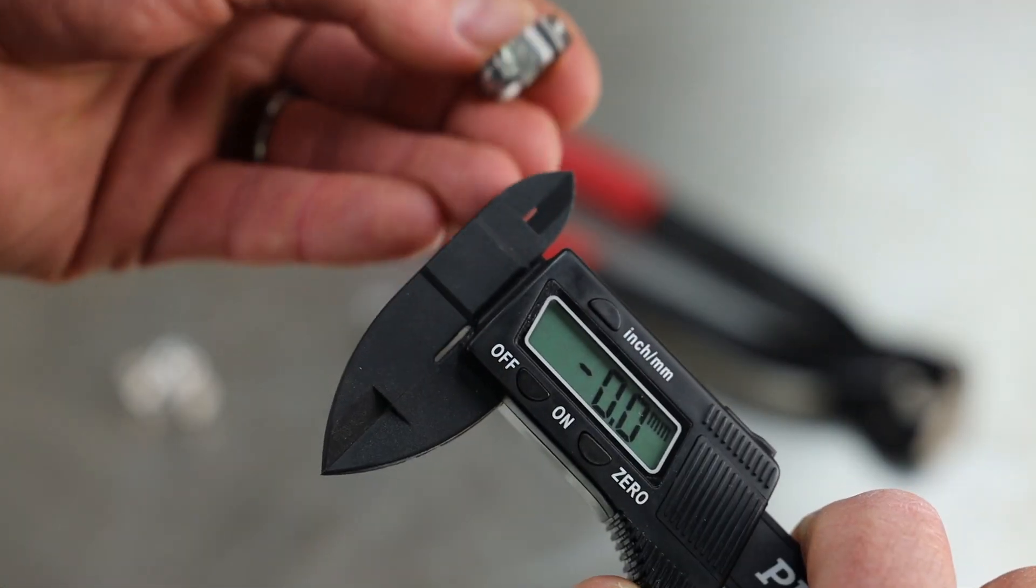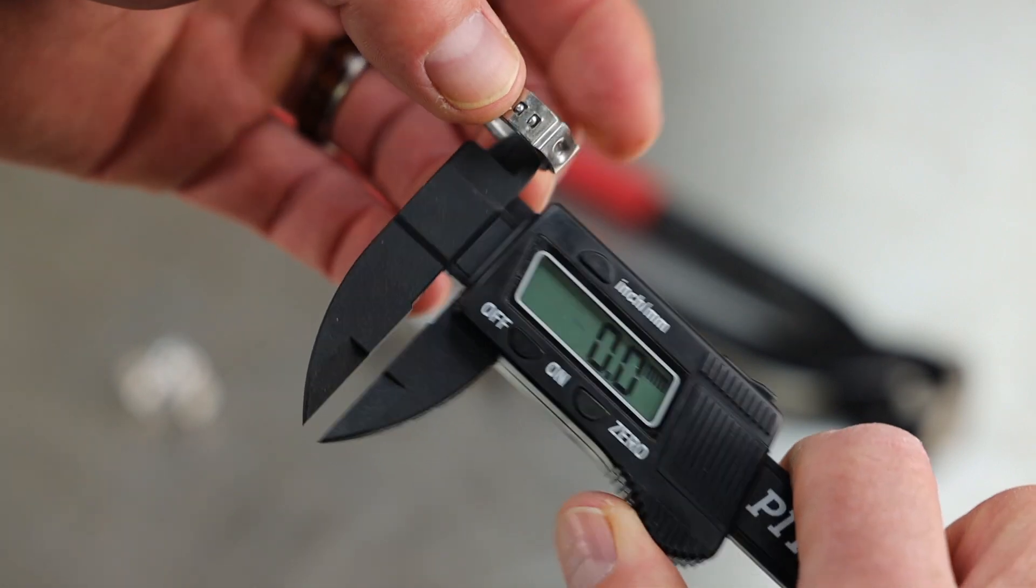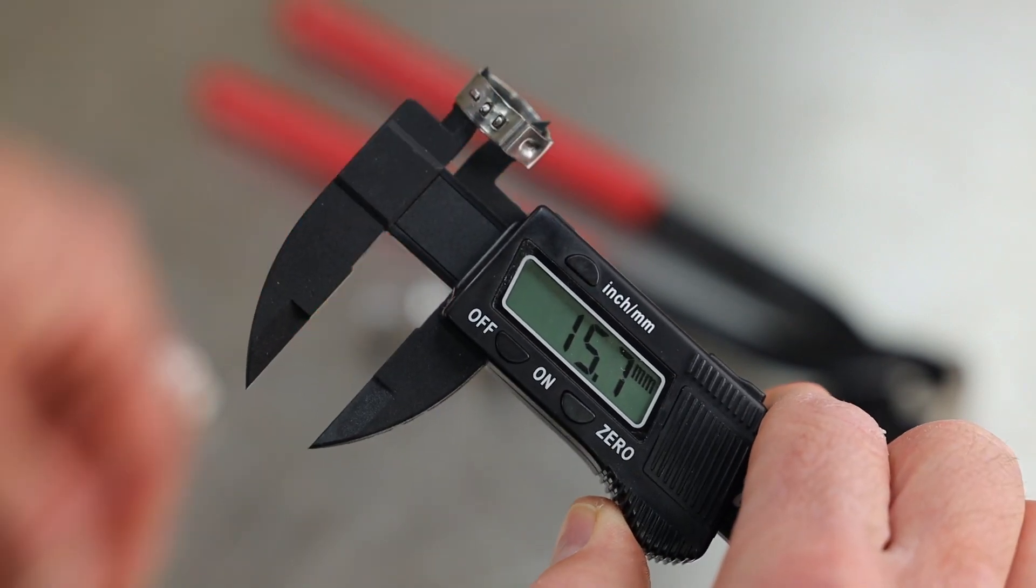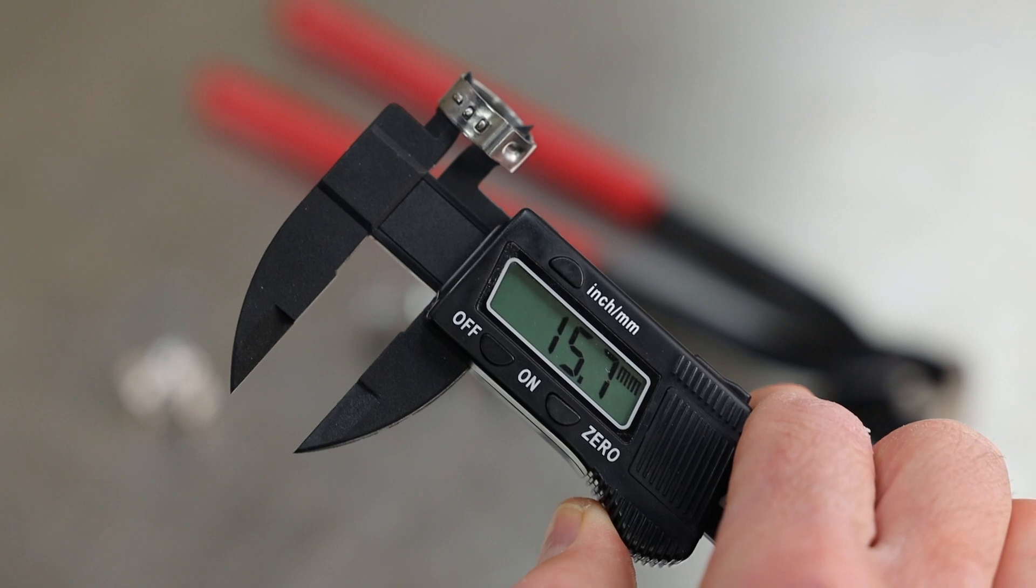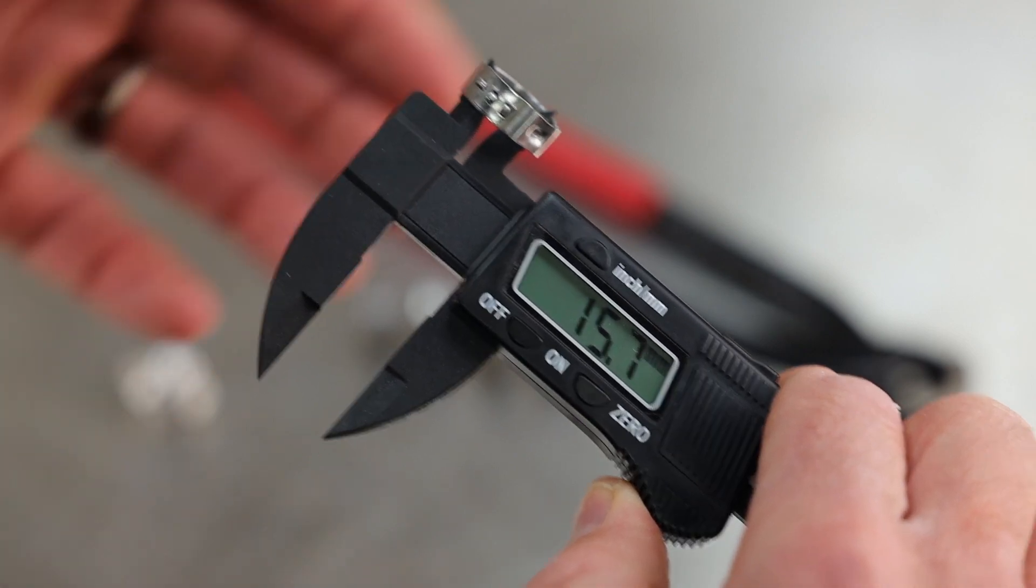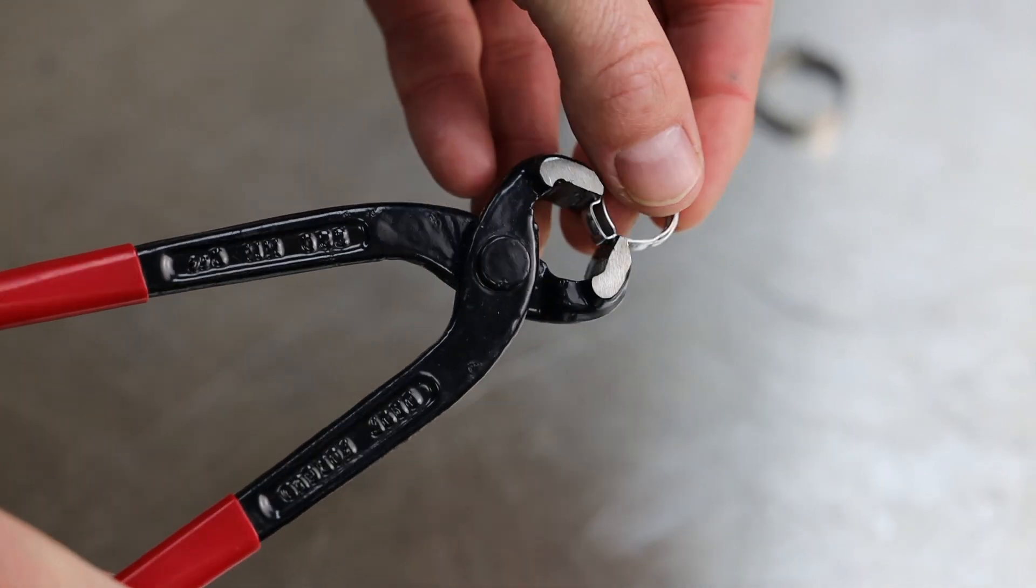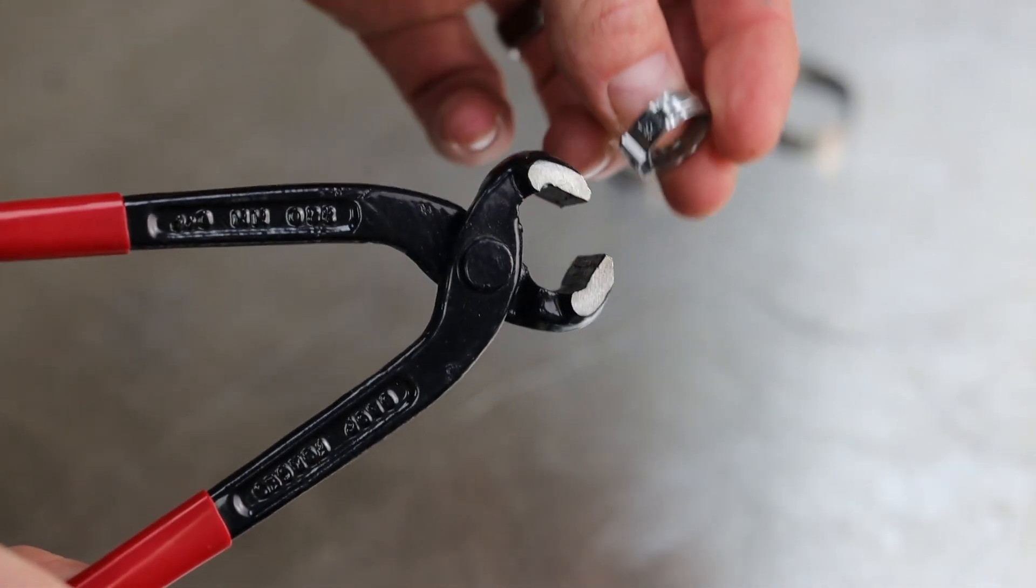Here we're looking at a 15.7 millimeter Oetiker style clamp. When we measure the inner diameter of the clamp, it reads exactly 15.7 millimeters. Once clamped, the inner diameter will shrink.